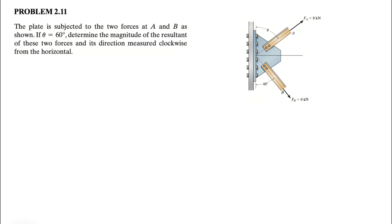One of them is 8 kilonewtons and the other one is 6 kilonewtons. And we know that the angle theta in the figure is 60 degrees. So we know theta in here is 60 degrees. And we have to find the magnitude of the resultant of these two forces. And in the second part of the question, we have to also figure out its direction measured clockwise from the horizontal.